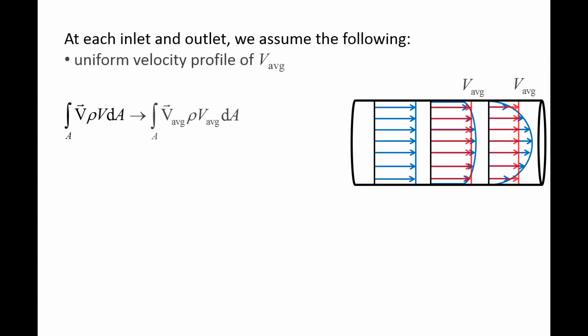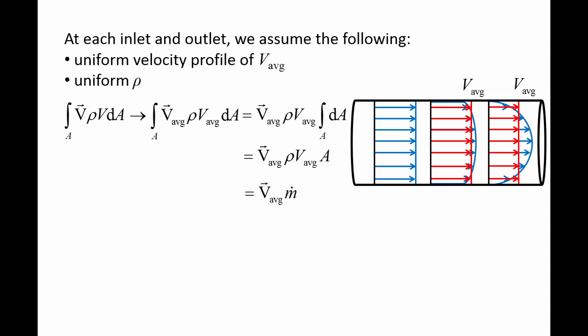In order to simplify the integral, we make a couple of assumptions. First, we replace the actual velocity profile with an average velocity that produces the same mass flow rate as the actual profile. Next, we assume that the density is uniform over the entire cross-sectional area. Since both the velocity and density are assumed constant over the cross-section, we can pull them out of the integral, and the integral of dA is simply the area A. Rho times v_average times A is the mass flux m-dot. The assumption of uniform velocity and density allows us to convert the integral into a simple algebraic expression: the average velocity vector times m-dot, which has units of momentum per time.